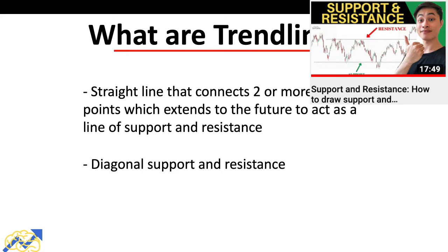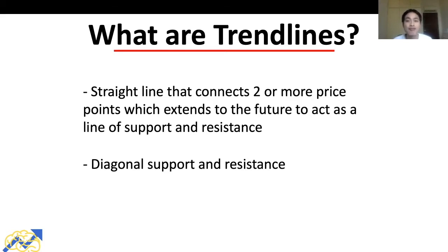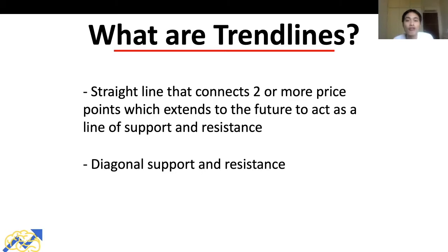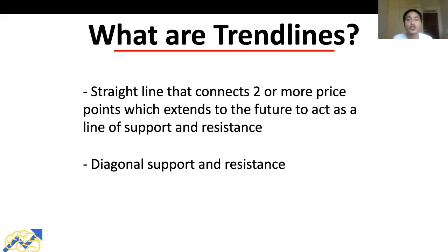In a nutshell, support and resistance are price floors and price ceilings respectively. When prices reach a support level, they tend to bounce back up, and when prices reach a resistance level, they tend to bounce back down. The typical support and resistance are horizontal, but trend lines are diagonal support and resistance — they are usually slanted upward or downward.